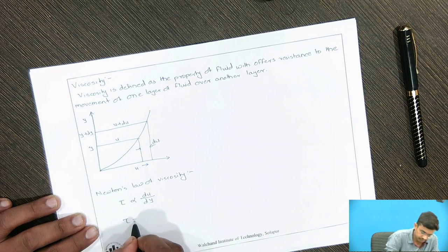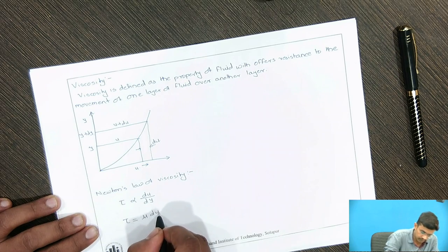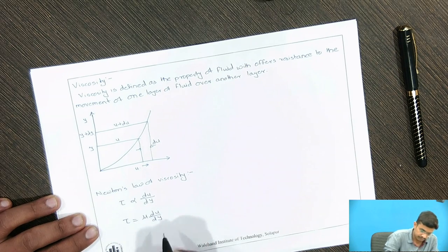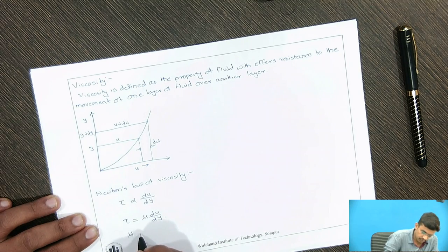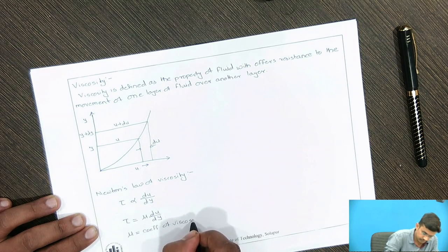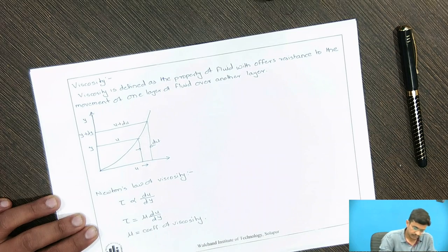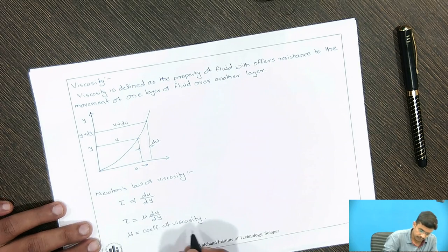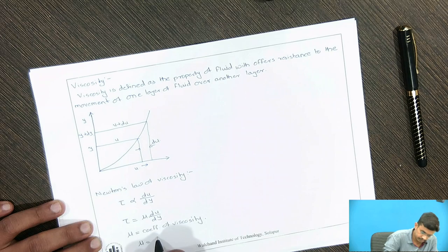Removing the proportionality sign and replacing with equality: tau equals mu times du by dy. Here, mu is called the coefficient of viscosity. The formula for coefficient of viscosity is: mu equals tau divided by du by dy.